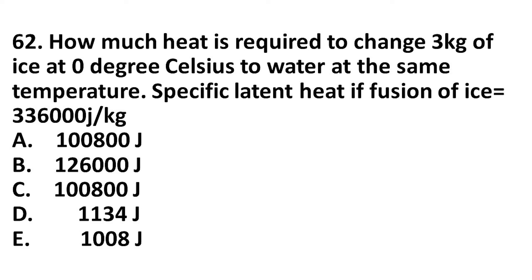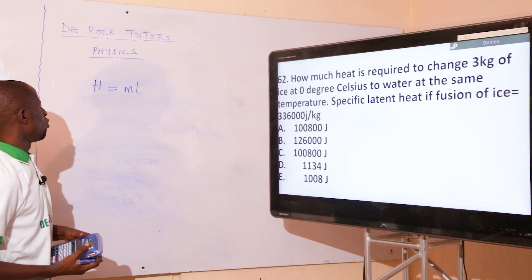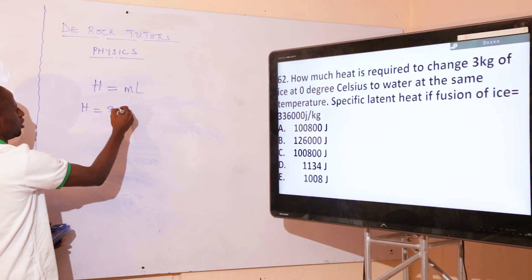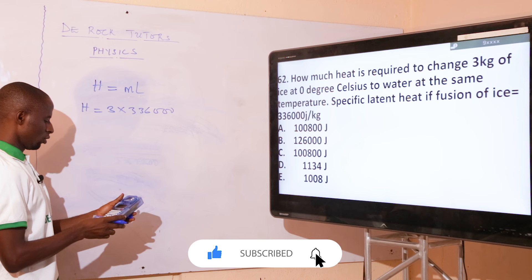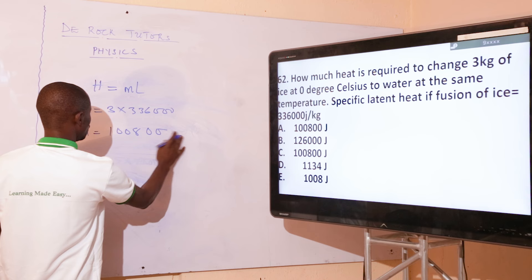The next question: How much heat is required to change 3 kg of ice at zero degrees Celsius to water at the same temperature, given that the specific latent heat of fusion of ice is 336,000 J/kg? The formula is quantity of heat H equals mL, where L is the specific latent heat of fusion and m is the mass. So H equals 3 × 336,000, giving H equals 1,008,000 joules. The correct option is option A.